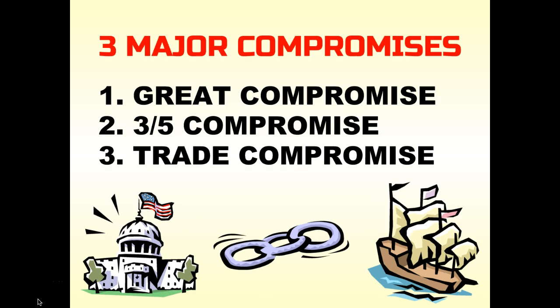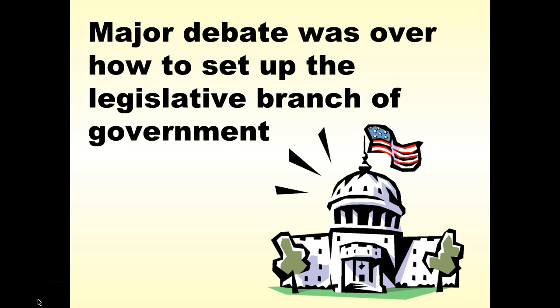We're going to talk about three major compromises today: one is called the Great Compromise, one is called the Three-Fifths Compromise, and one is simply a compromise on trade. First, we have to talk about the battle that takes place over how to set up the legislative branch of government.